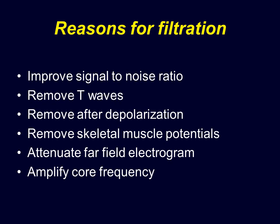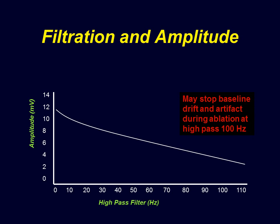Why do we filter? We want to improve the signal-to-noise ratio, remove T waves, remove after-depolarizations in case of pacemakers, and remove skeletal muscle potentials. We want to attenuate far-field electrograms and amplify the core frequency of interest. Filtration may also stop baseline drift — particularly if your lab is not well grounded, you could have baseline fluctuation during ablation, and the high-pass filter can be raised from 30 to 100 to address this.